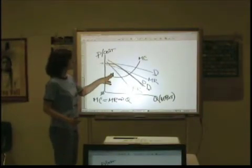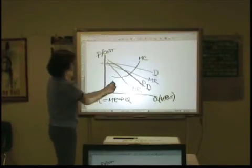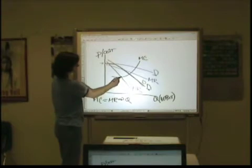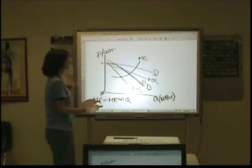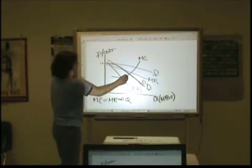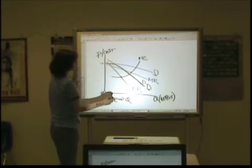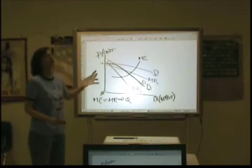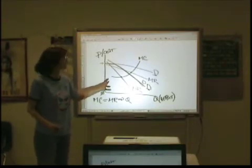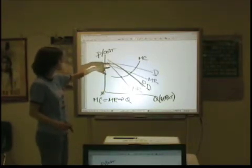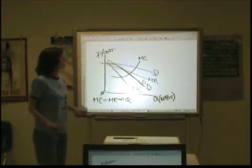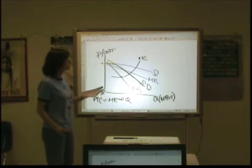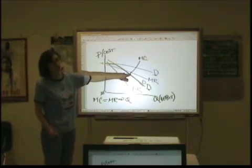Now, if we're looking at our first demand curve, then we're here, because that's our first marginal revenue curve. If we're looking at our second demand curve, then we're here. But which level of production do we actually want to produce at? Because we're dealing with two pieces of two different curves. We need to figure out what the marginal revenue curve looks like that goes with this demand curve.